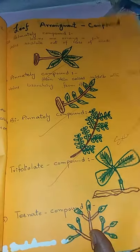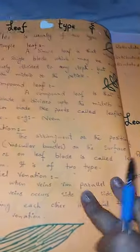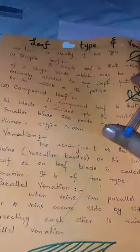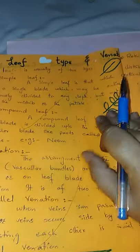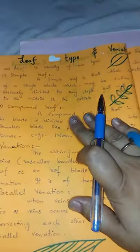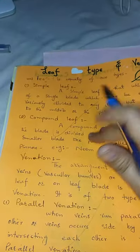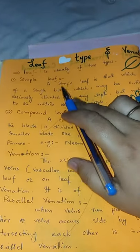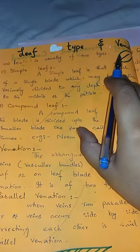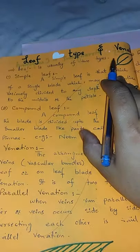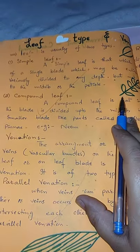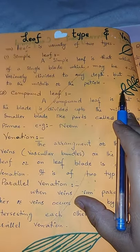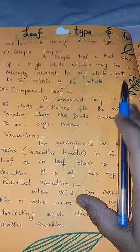In terms of leaf type, there are two main categories: simple leaves and compound leaves. A simple leaf has an undivided blade, while a compound leaf has a blade divided into separate leaflets.